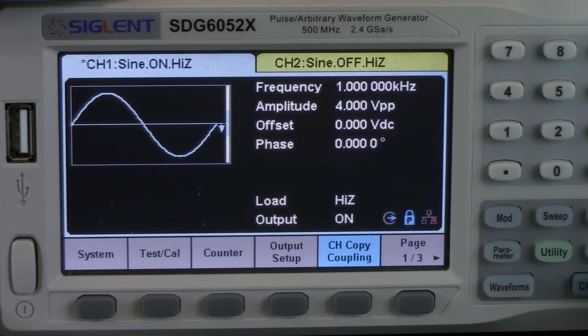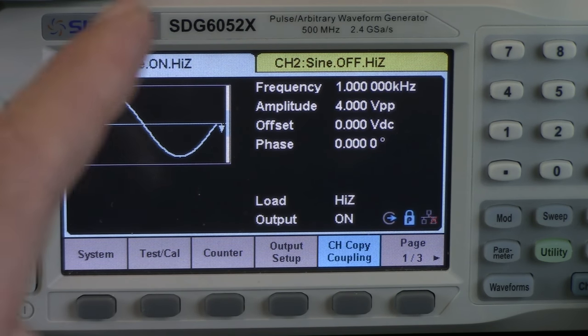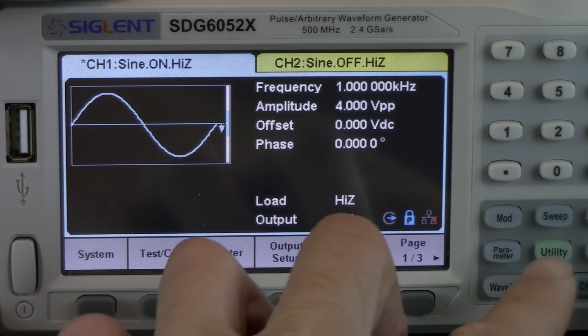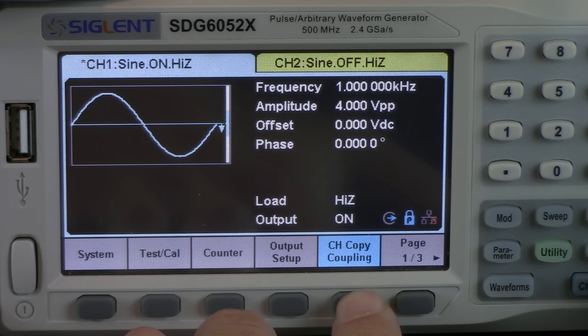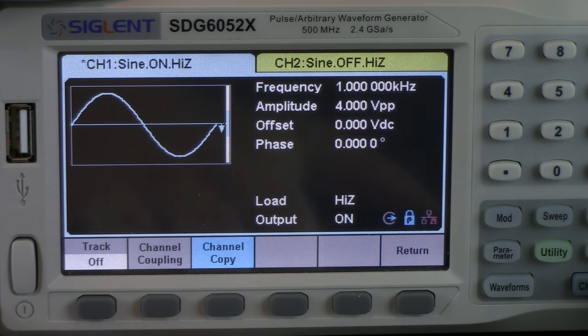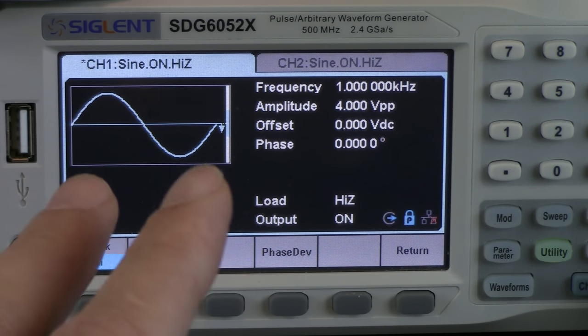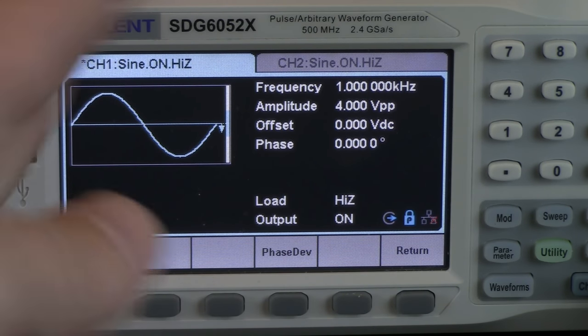Before we get everything going we need to configure the SDG, and we want channel 1 and channel 2 to track identically. And that means we want the function, the frequency, and the amplitude as well as the output on and off state to happen simultaneously. In order to do that we can turn on the tracking mode for the SDG-X. So we're going to press the utility key, we're going to press channel copy coupling, and then we're going to turn on tracking. What that's going to do is now any command or any kind of configuration that we set up for channel 1 is going to be mimicked onto channel 2.